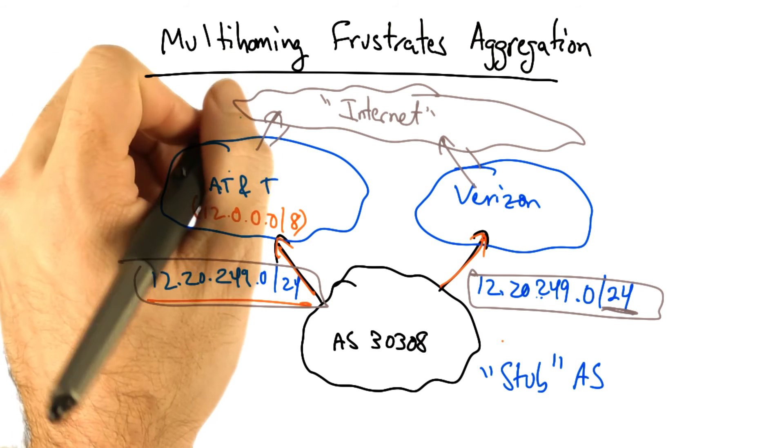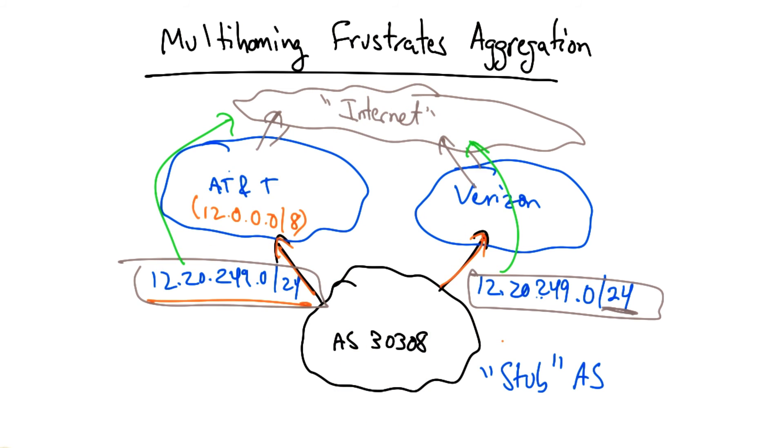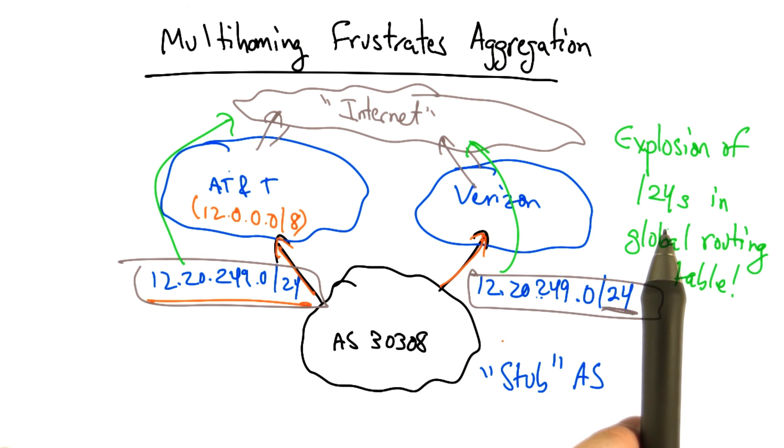As a result, both AT&T and Verizon must advertise the same /24 to the rest of the internet. This results in an explosion of /24s in the global internet routing table. You can imagine that if a lot of stub ASs wanted to be multi-homed, then suddenly we've got a lot more /24s in the global routing table than might otherwise exist without multi-homing.